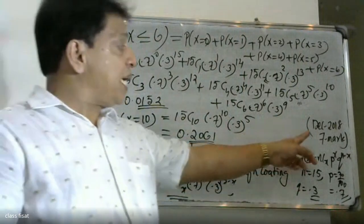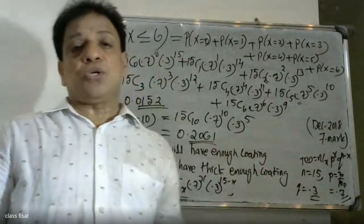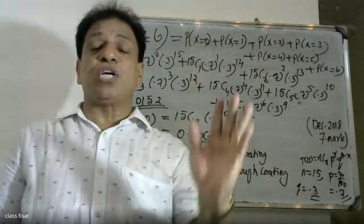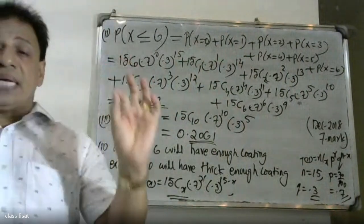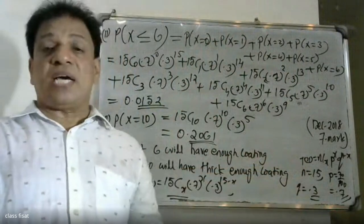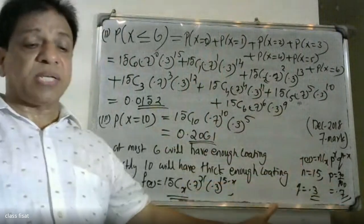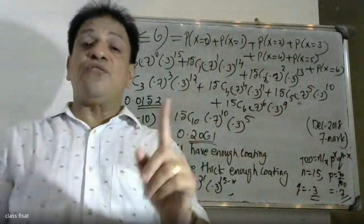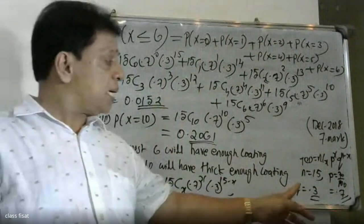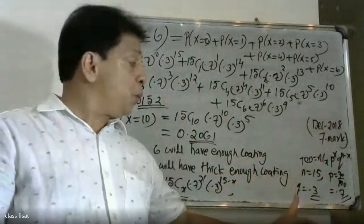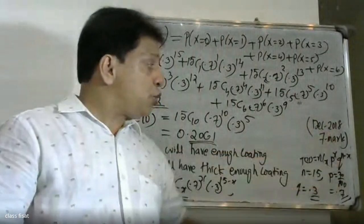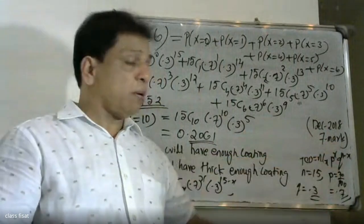To summarize the solution: the binomial distribution function is NCX * P raised to X * Q raised to N minus X, with n equals 15 and probability of success P equals 70/100 equals 0.7. Since P plus Q equals 1, Q equals 1 minus P equals 0.3. Using this function we calculated all three probabilities for the given problem.